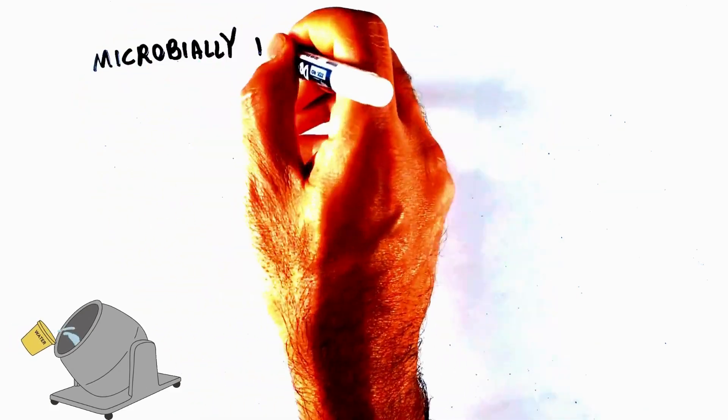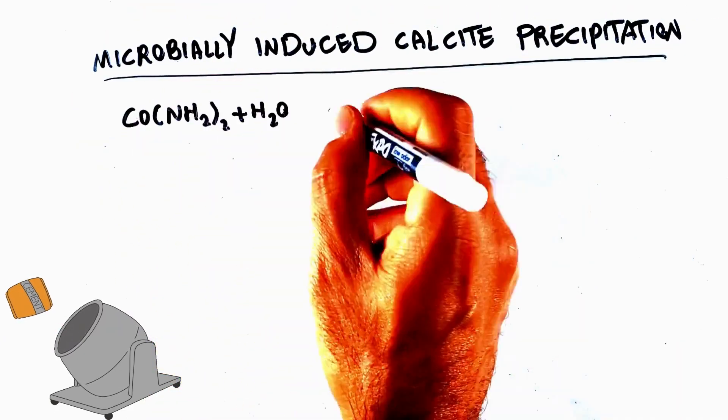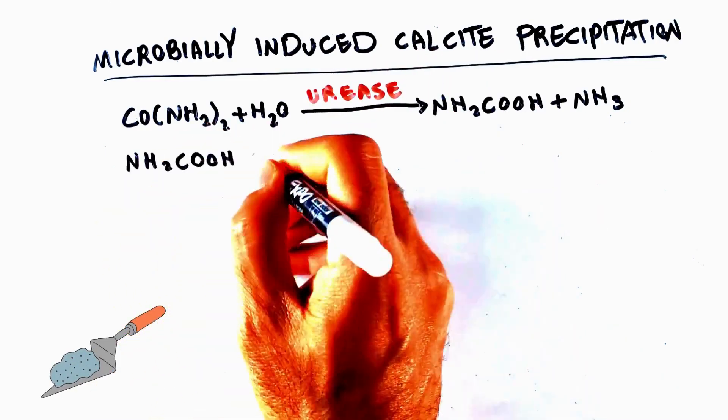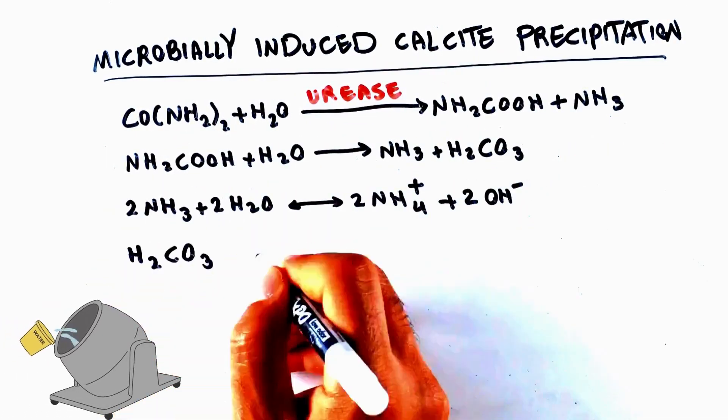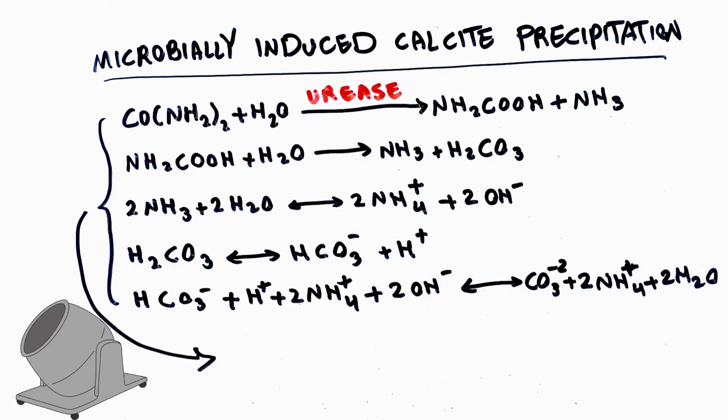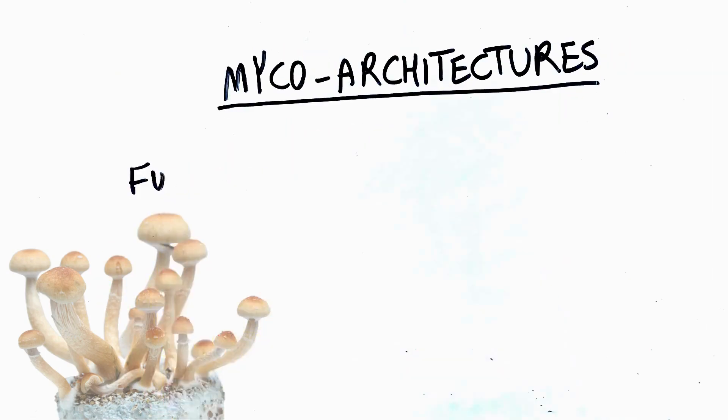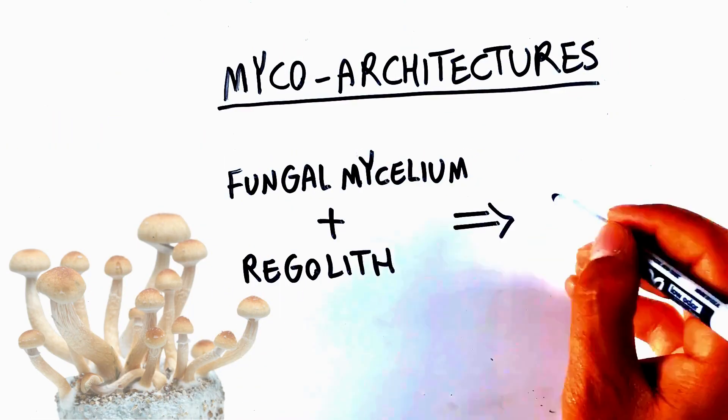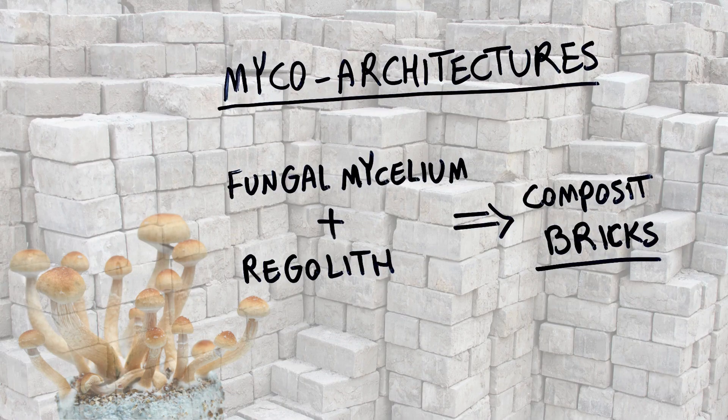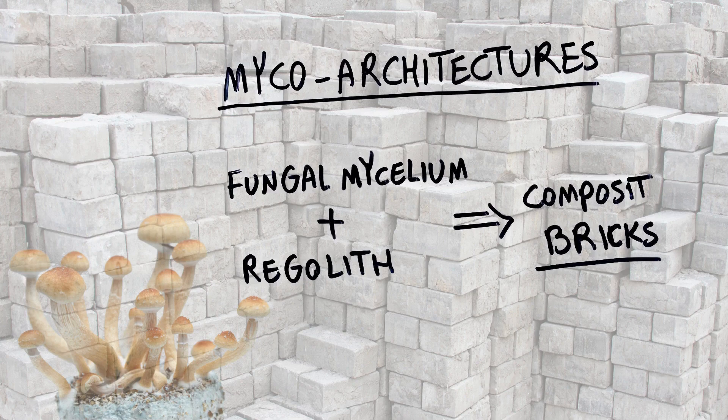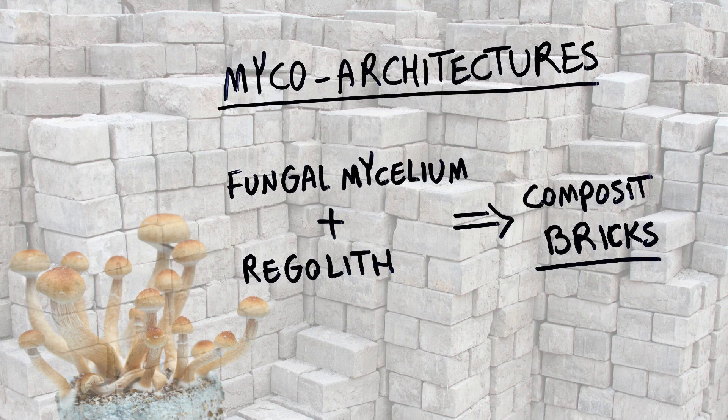Within the materials and manufacturing facility, structural binding agents such as calcium carbonate can be made through microbial-induced calcite precipitation. This can serve as a bioconcrete. Also, mycoarchitectures might be good candidates for making rigid structural components. They are made from fungal mycelium networks combined with regoliths to create a rigid composite that can be used as bricks.